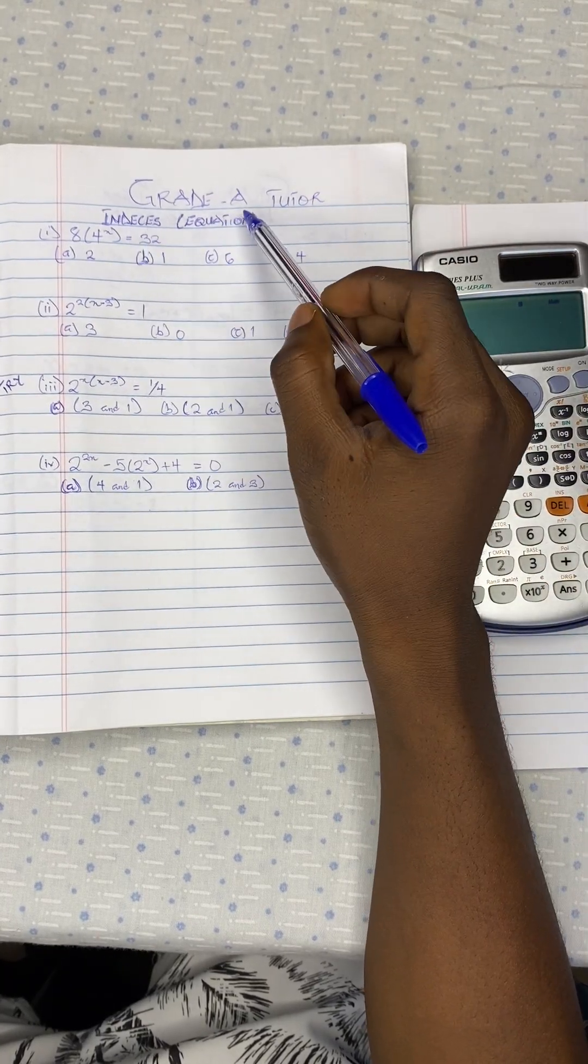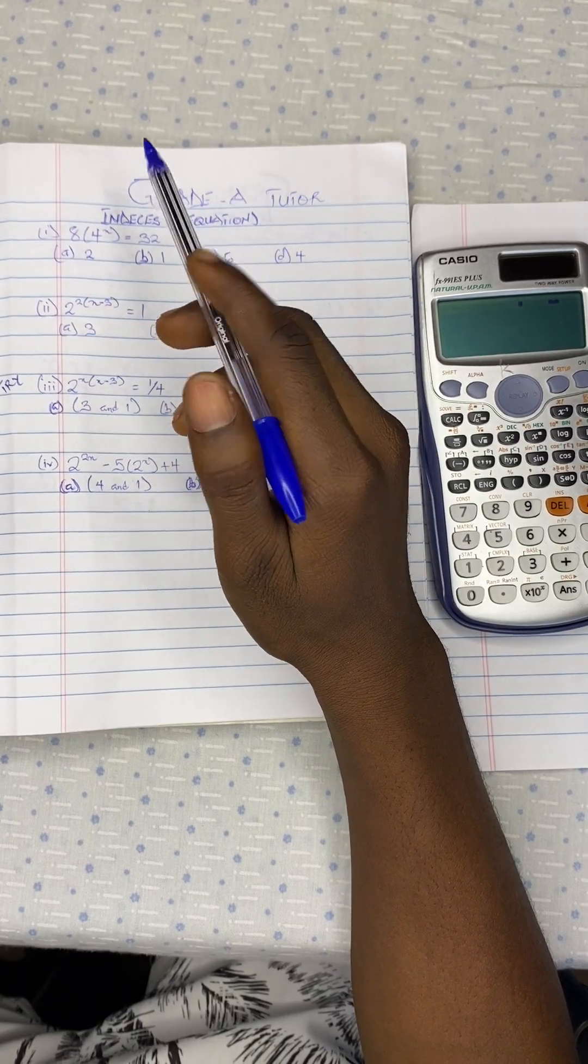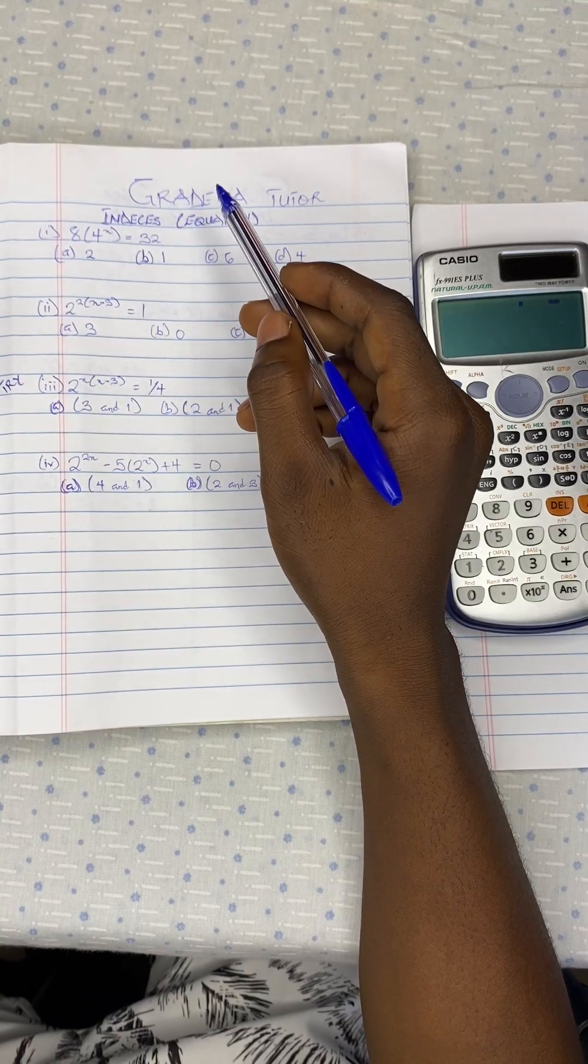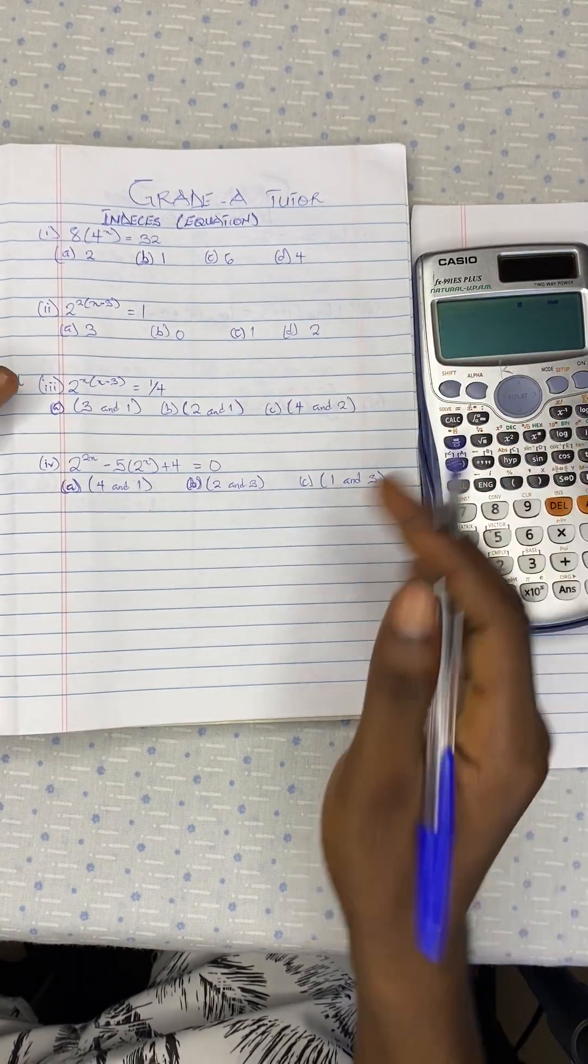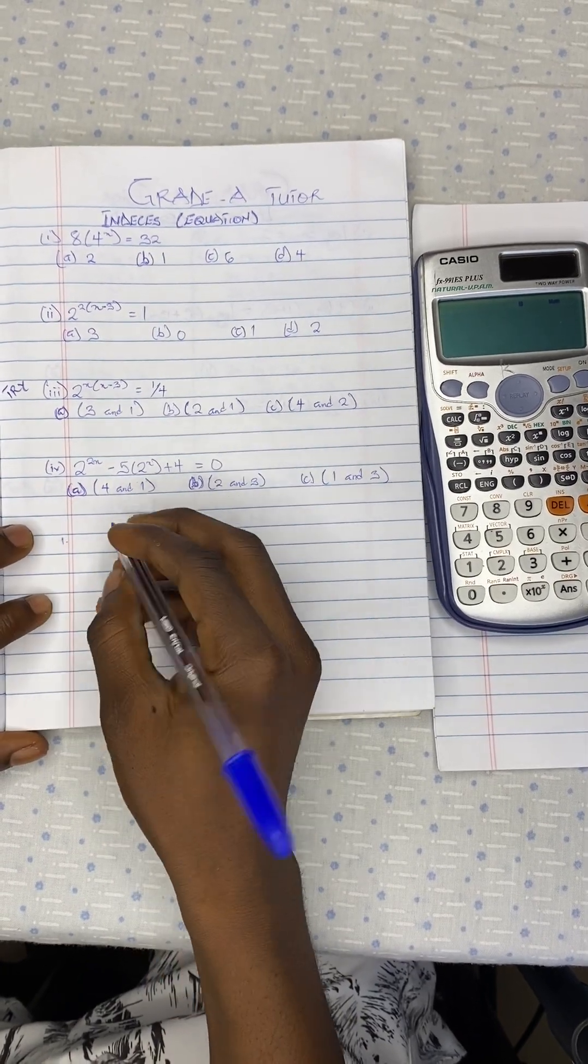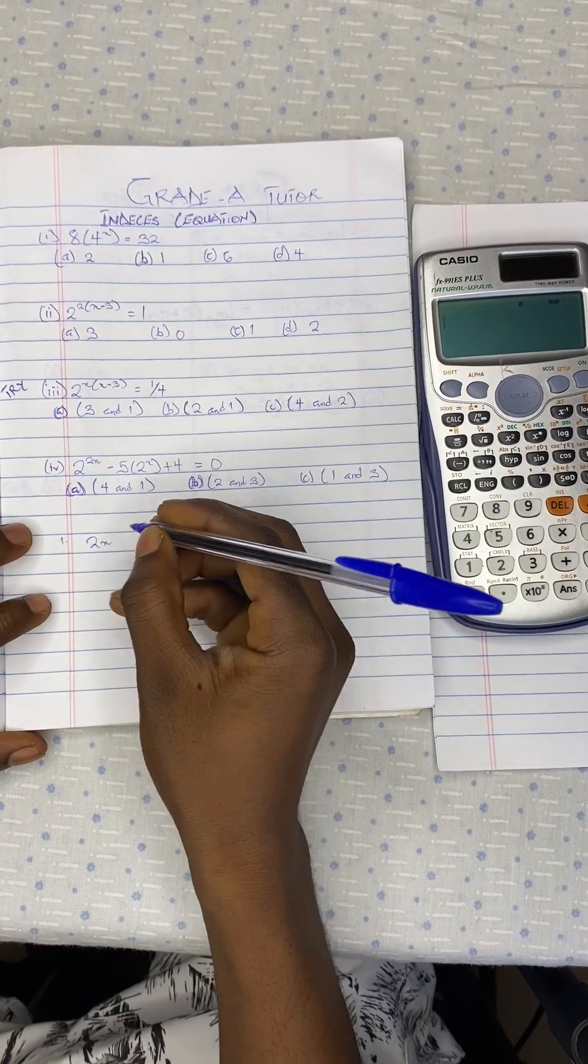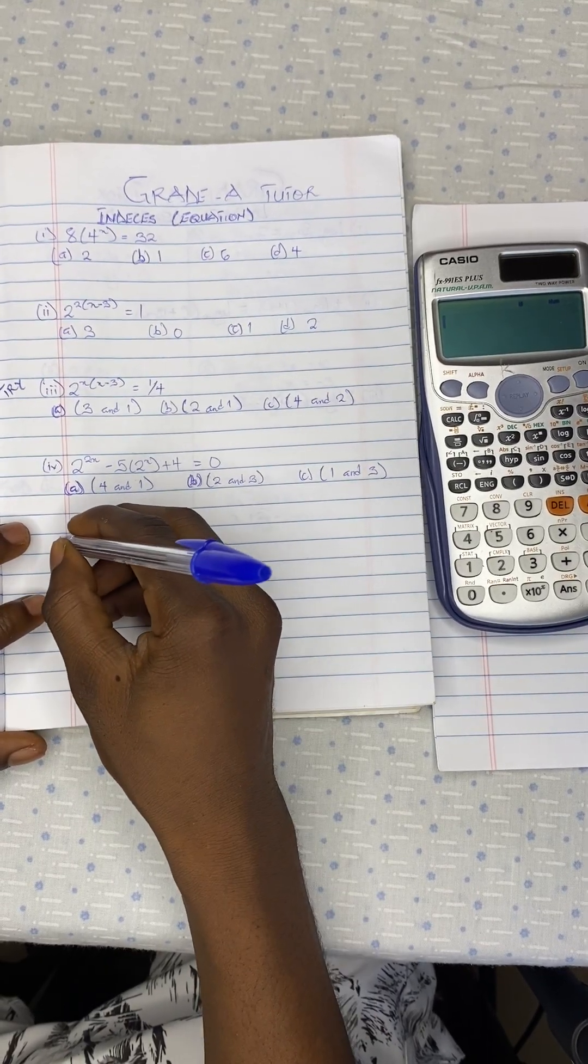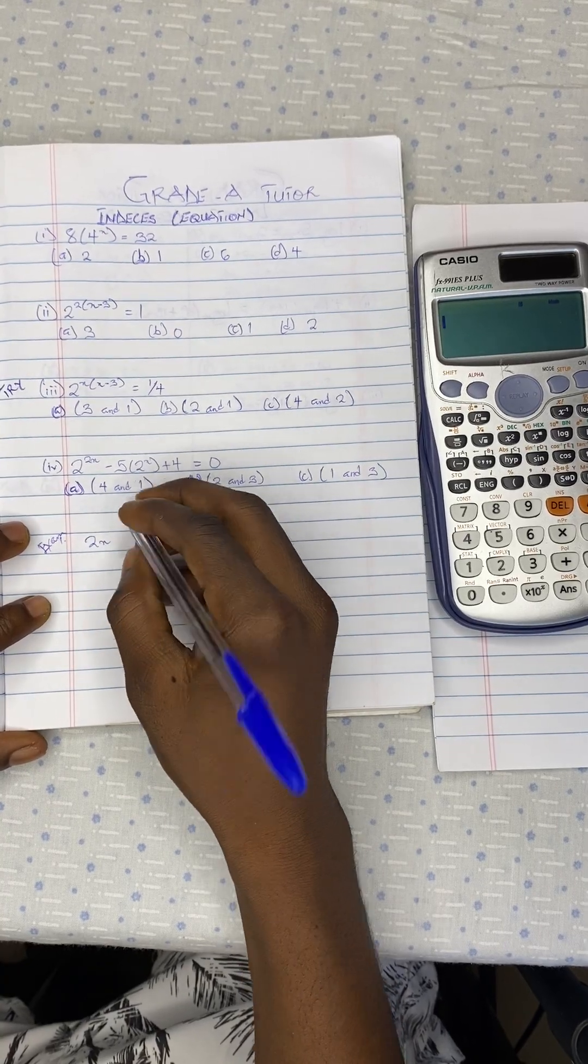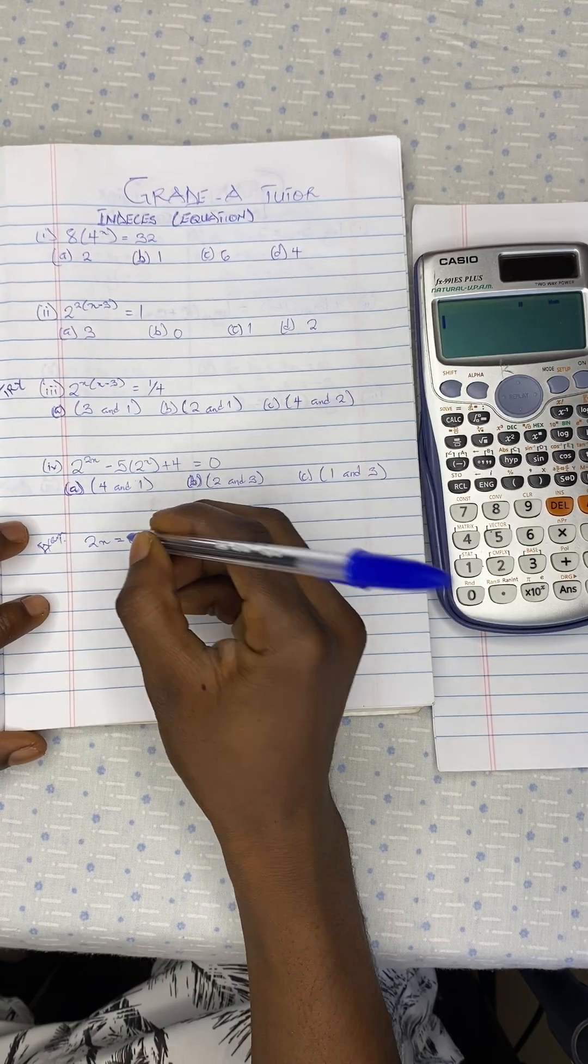For every equation, we are going to group all the values and the variables on our left hand side so that our results will be equal to 0. For example, taking question 1, if you have 2x equal to 6,